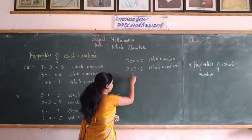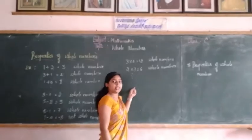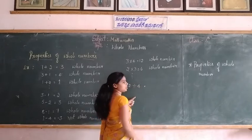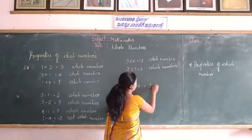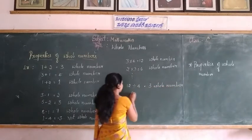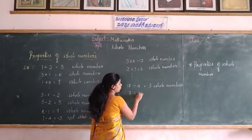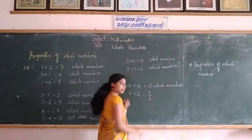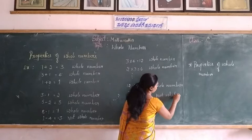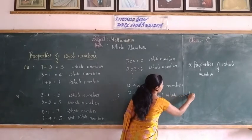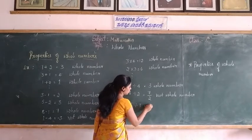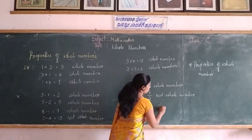Next, consider division. 12 divided by 4 which is equal to 3 — we get a whole number. 7 divided by 2 is not a whole number. 6 divided by 3 which is equal to 2 — 2 is a whole number.